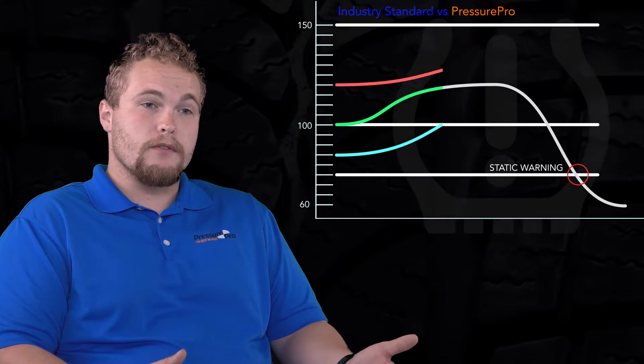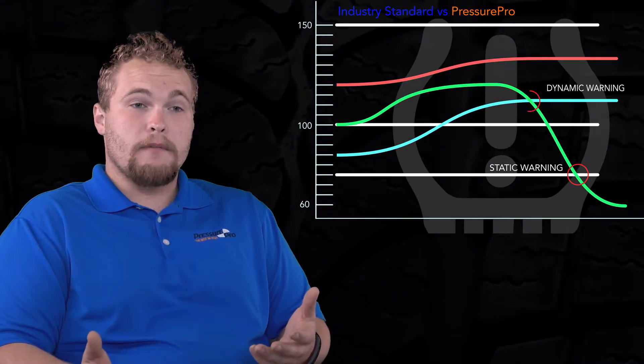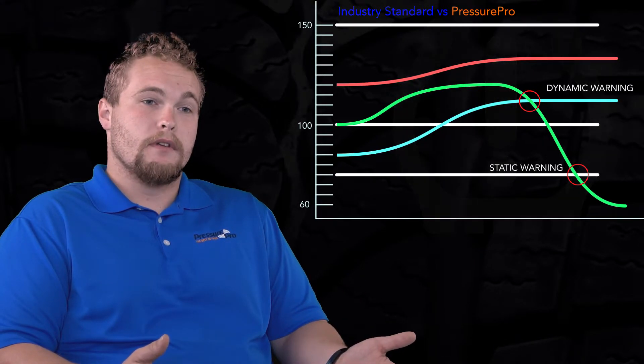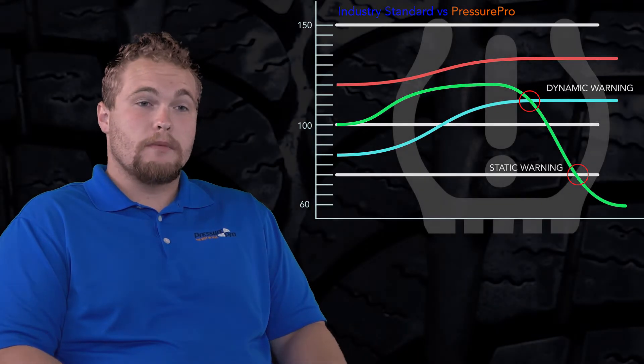Pressure Pro's aptly named dynamic sensors provide an added layer of protection by analyzing and adapting the alert parameters based on the recent tire performance. This translates to the market's tightest warnings, delivering alerts up to three times faster.